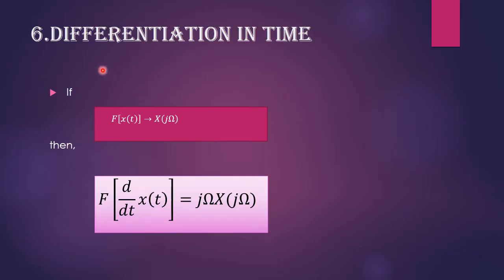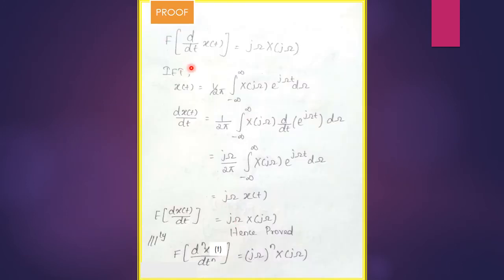The next property is differentiation in time. When we differentiate in the time domain and take the Fourier transform, the result is jω·X(jω). That is, the Fourier transform of d/dt[x(t)] = jω·X(jω). To prove this, we start with the inverse Fourier transform: x(t) = (1/2π)·∫X(jω)·e^{jωt} dω. Using the inverse Fourier transform makes this proof simpler.